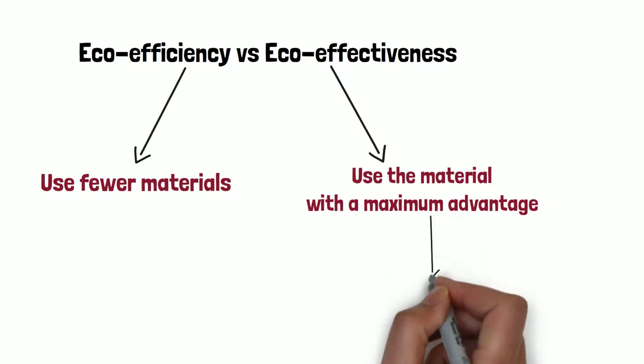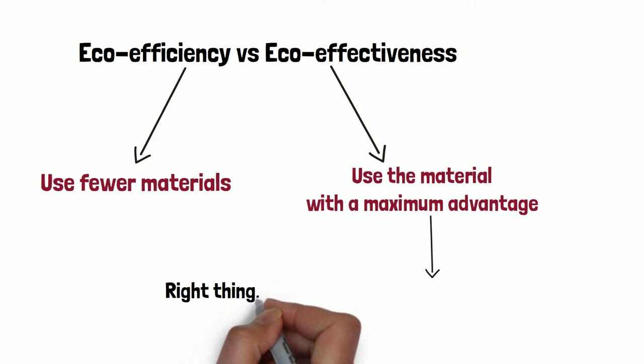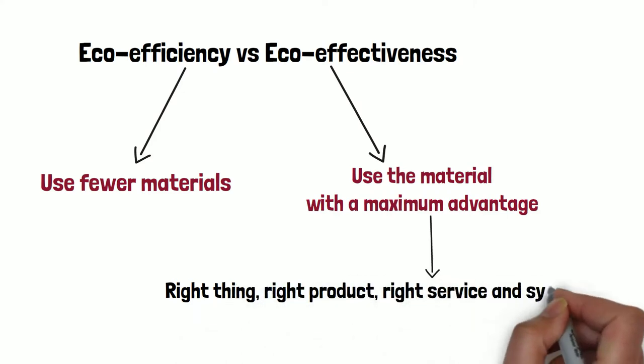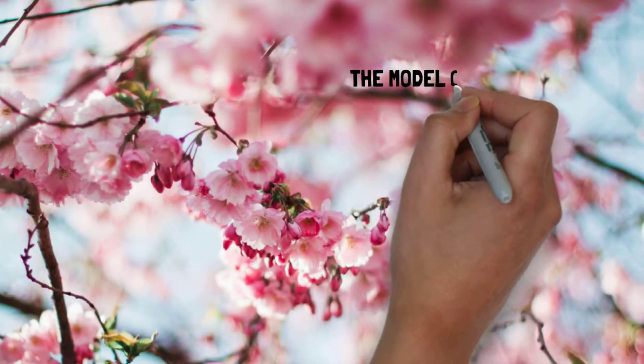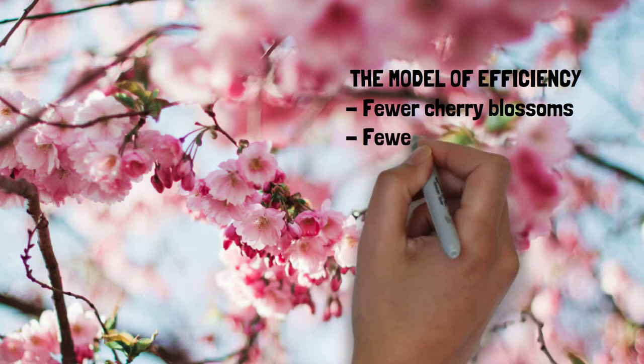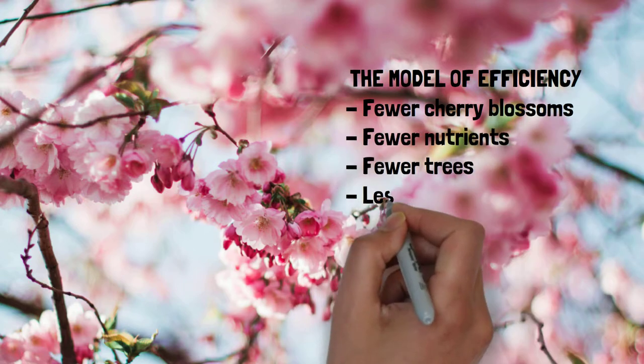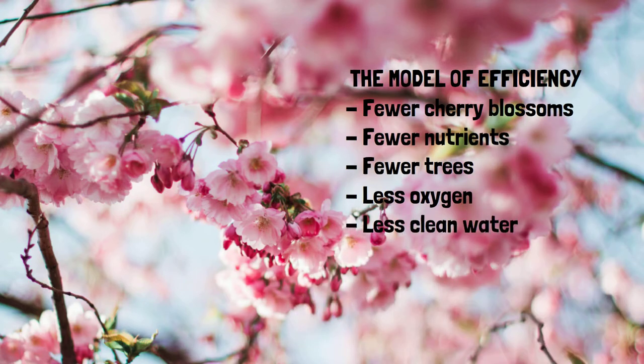The concept of eco-effectiveness means working on the right things, on the right products, and the services, and the system instead of making the wrong things less bad. If we went along with the model of efficiency, there would be fewer cherry blossoms and fewer nutrients, fewer trees, less oxygen, and less clean water.